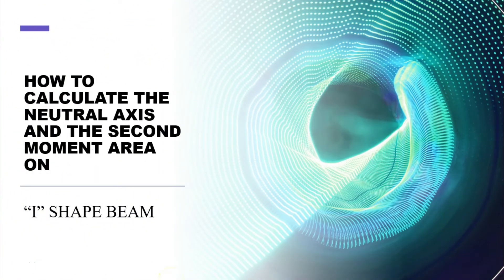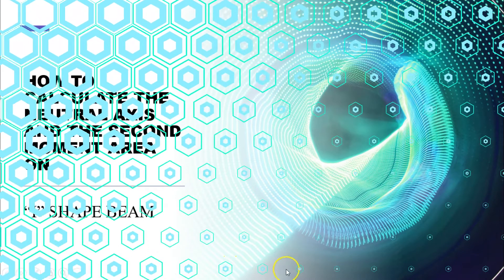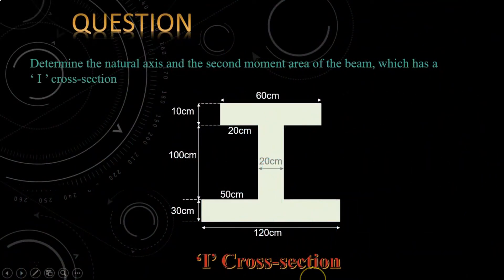How to calculate the neutral axis and the second moment of area on the I-shaped beam? Determine the neutral axis and the second moment of area of the beam which has an I-cross-section.